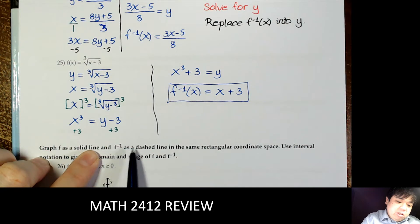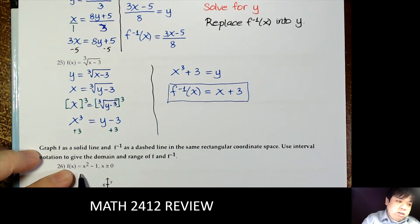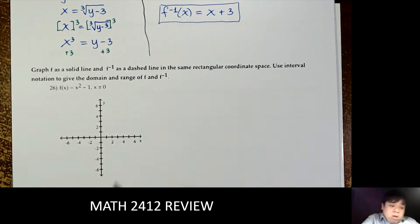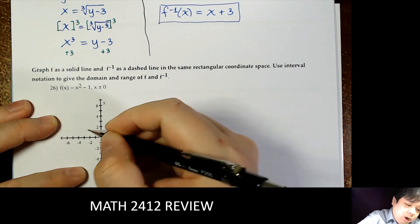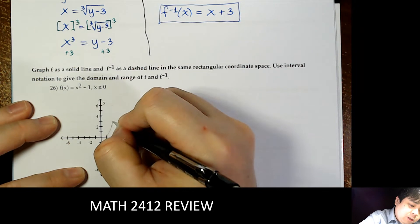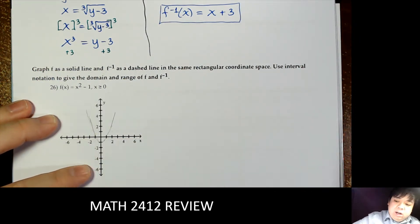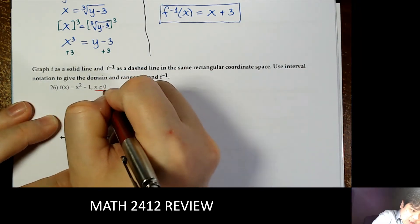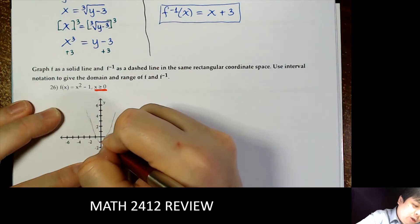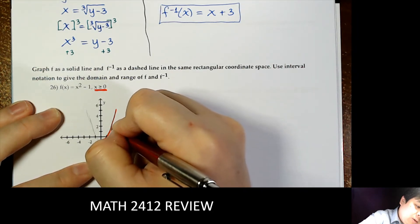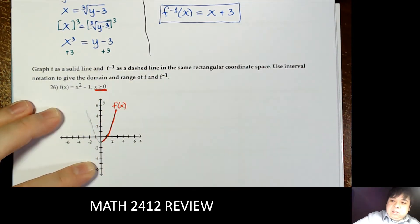We graph the function as a solid line and the inverse as a dashed line in the coordinate system. For f(x) = x squared minus 1, the parabola opens up and shifts down one unit from x squared. However, this function is only for x greater than or equal to 0, so we only have the right branch of the parabola.